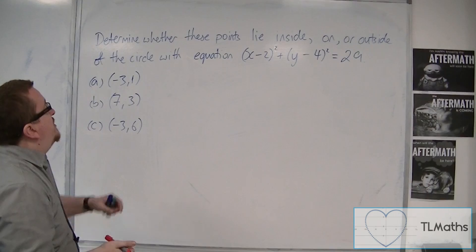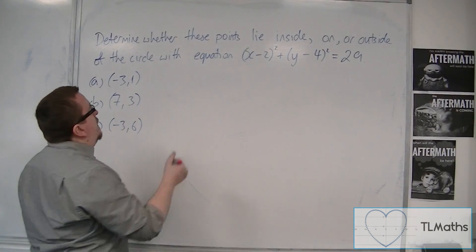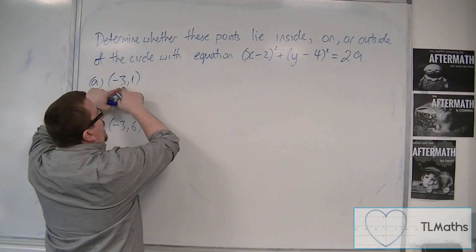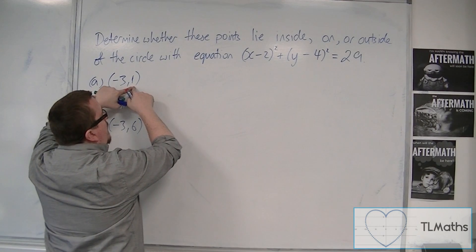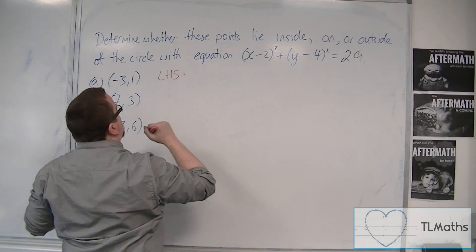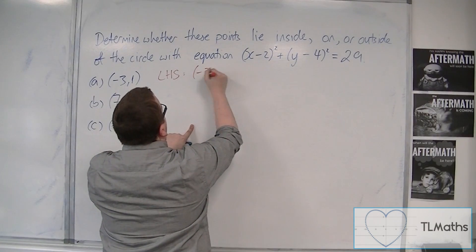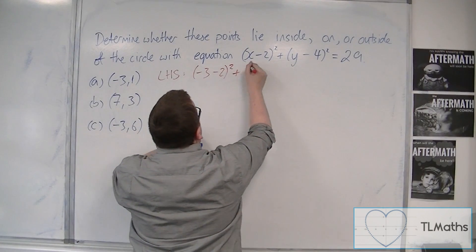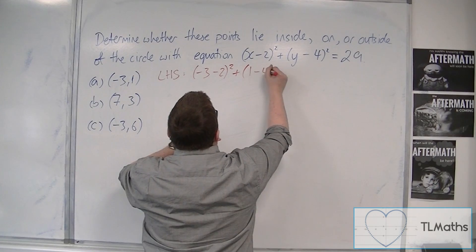So if we start with (-3, 1), what we're going to do is substitute the x for -3 and the y for 1, and just look at the left-hand side. So looking at the left-hand side, we have (-3 - 2)² plus (1 - 4)².